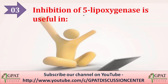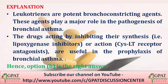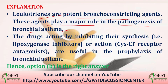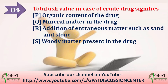The third question: inhibition of 5-lipoxygenase is useful in — cardiac failure, bronchial asthma, hepatic failure, or arthritis? The correct answer is bronchial asthma. Leukotrienes are potent bronchoconstricting agents that play an important role in the pathogenesis of bronchial asthma. Drugs acting by inhibiting their synthesis (lipoxygenase inhibitors) or blocking cys-LT receptors (leukotriene antagonists) are useful in the prophylaxis of bronchial asthma.